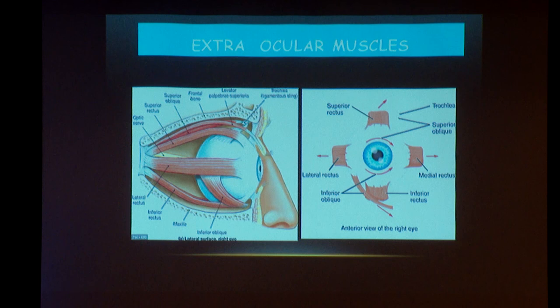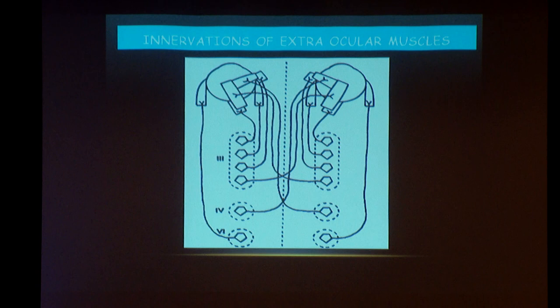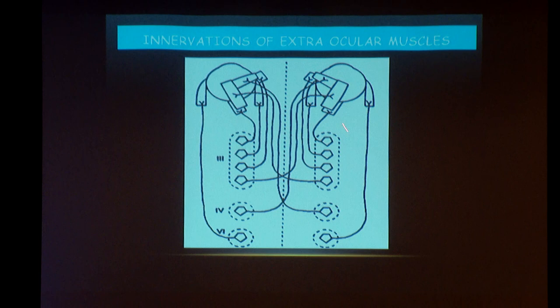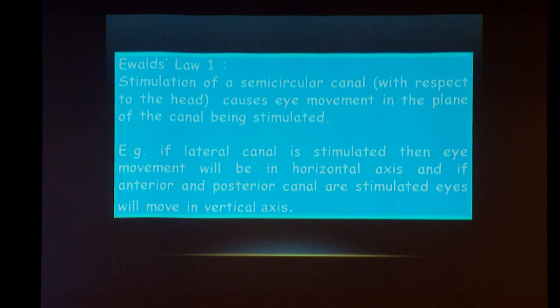Coming to the innervation: all recti are supplied by the oculomotor nerve, that is the third cranial nerve, except the lateral rectus which is supplied by the abducens nerve from the same side. The inferior oblique is also supplied by the third nerve, but the superior oblique is supplied by the trochlear nerve from the opposite side. This is a repetition of basic physiology, but we just cannot avoid it.